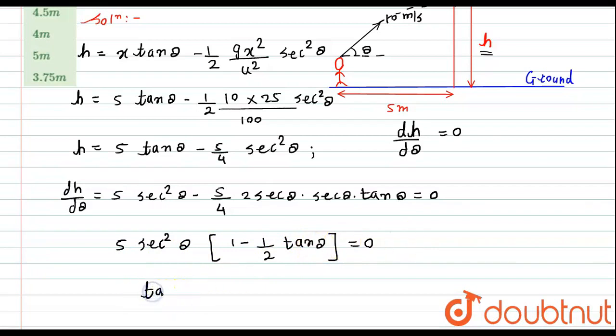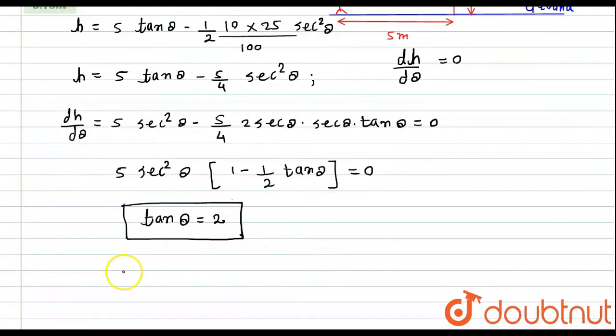From here, what we get? The value of tan theta will become equals to 2. This is the value which will give us the required value of h. In the place of tan theta, we will substitute the value of tan theta as 2.